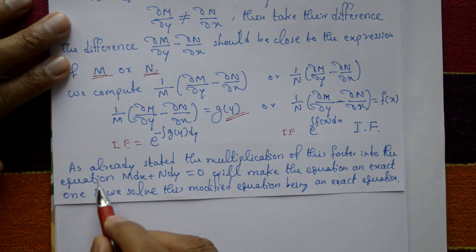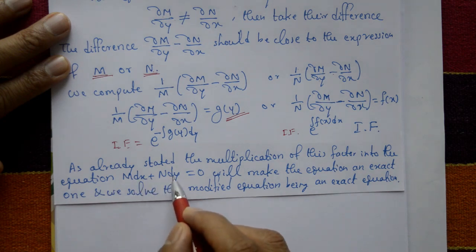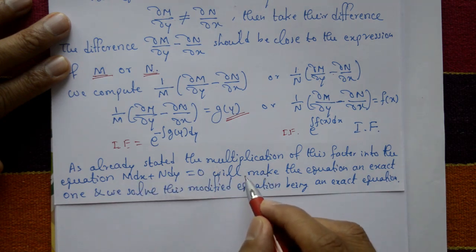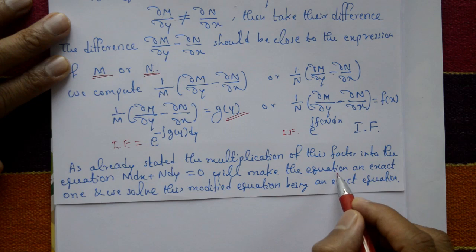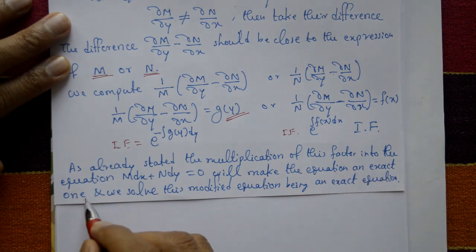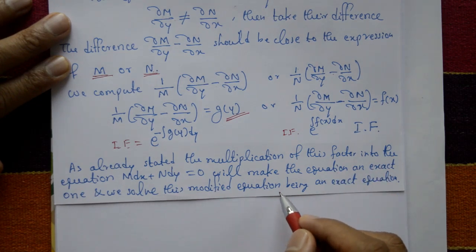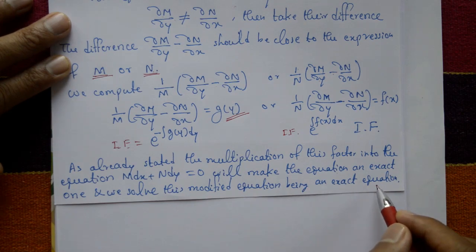Multiplying this factor into the equation M dx plus N dy equal to 0 will make the equation an exact one, and we solve this modified equation using exact equation methods.